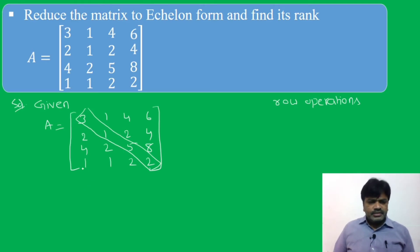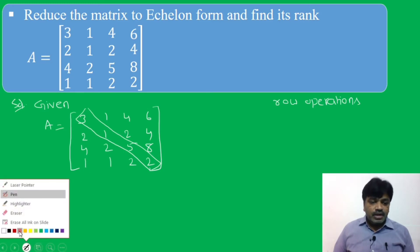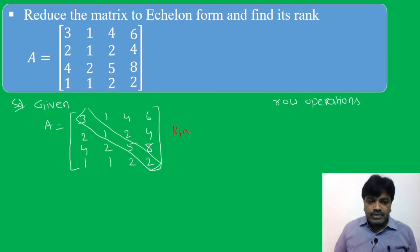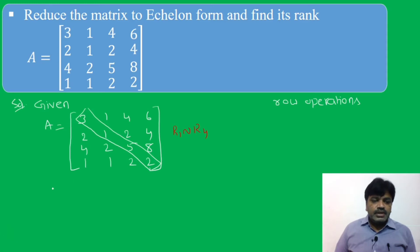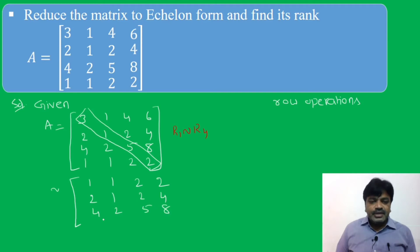I observe that the fourth row's first element is 1. So the first row operation is to interchange R1 and R4. After interchange, the matrix becomes: Row 1: [1,1,2,2], Row 2: [2,1,2,4], Row 3: [4,2,5,8], Row 4: [3,1,4,6].